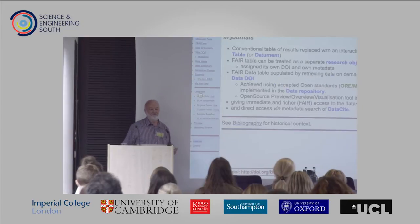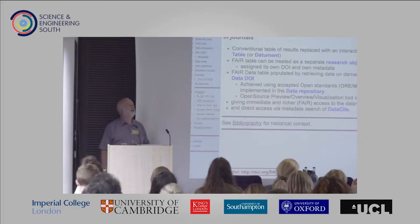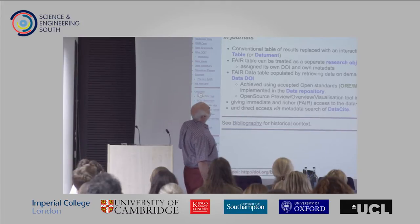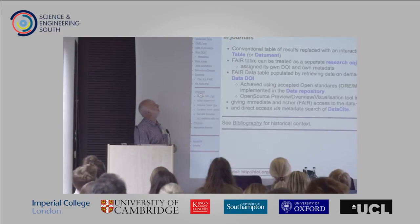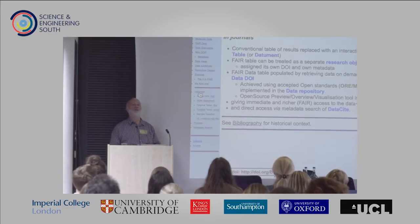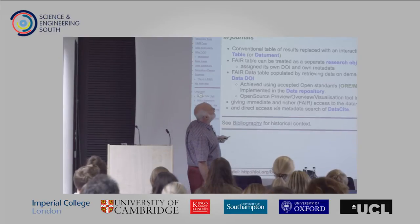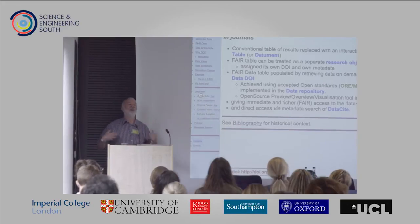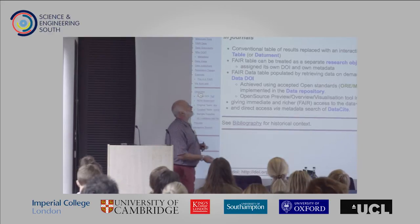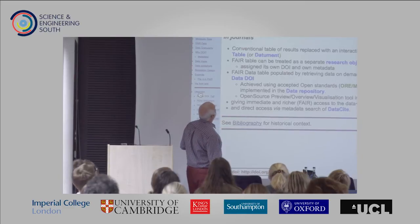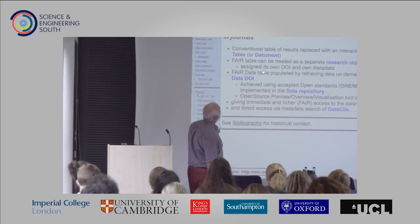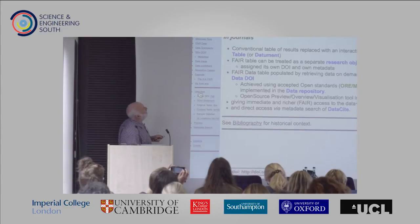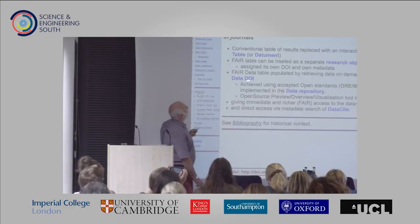Now onto the use case. We wanted to put all this together and integrate it into an actual published article. Our aspiration was to use these features to reinvent the standard journal table of numbers. We call it a FAIR data table because that table is findable, accessible, interoperable, and reusable — unlike most tables in journals. We wanted that table to be treated as its own separate research object, assigned its own DOI and its own metadata, and populated by retrieving data using the DOI of each individual item in the table.